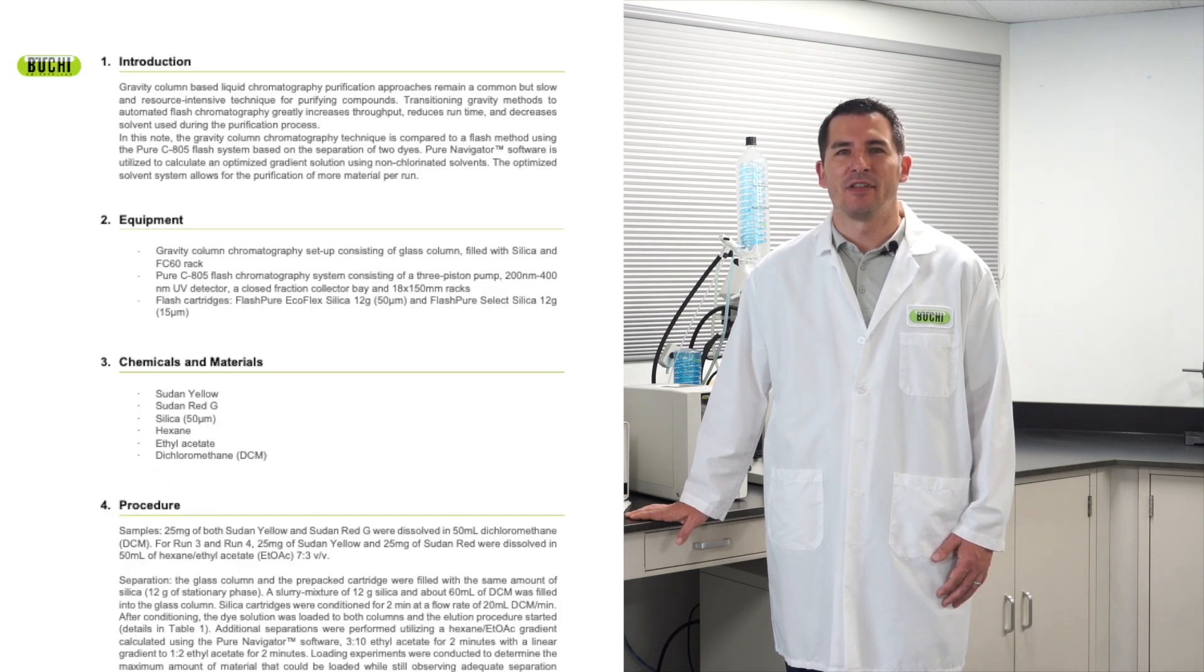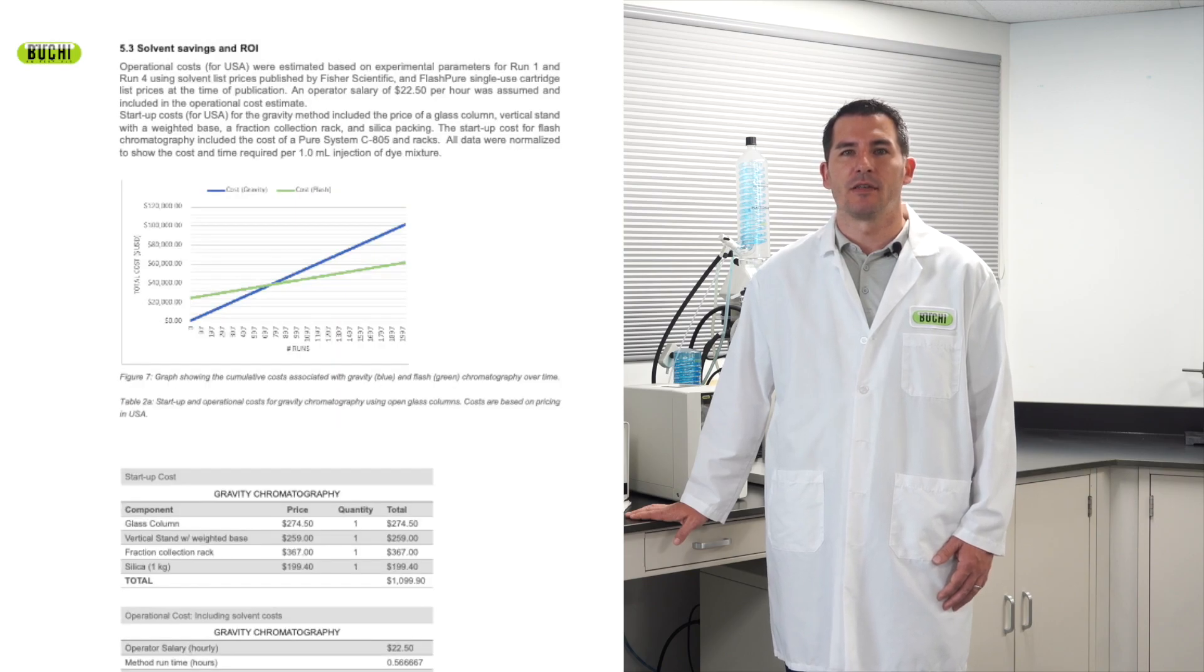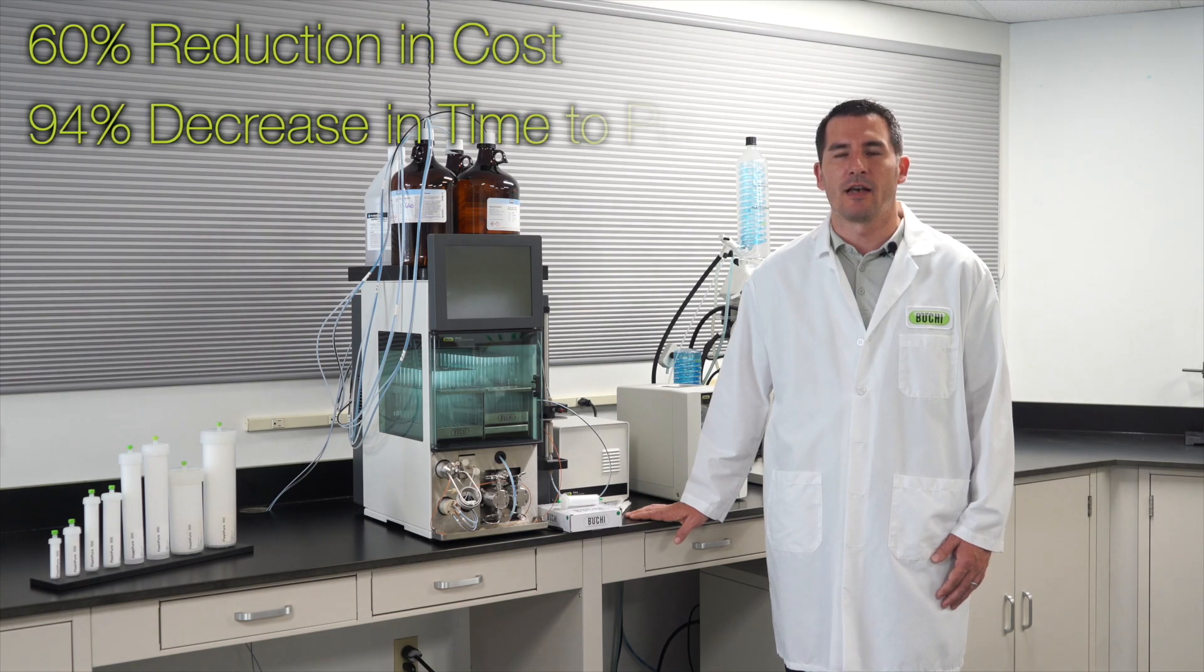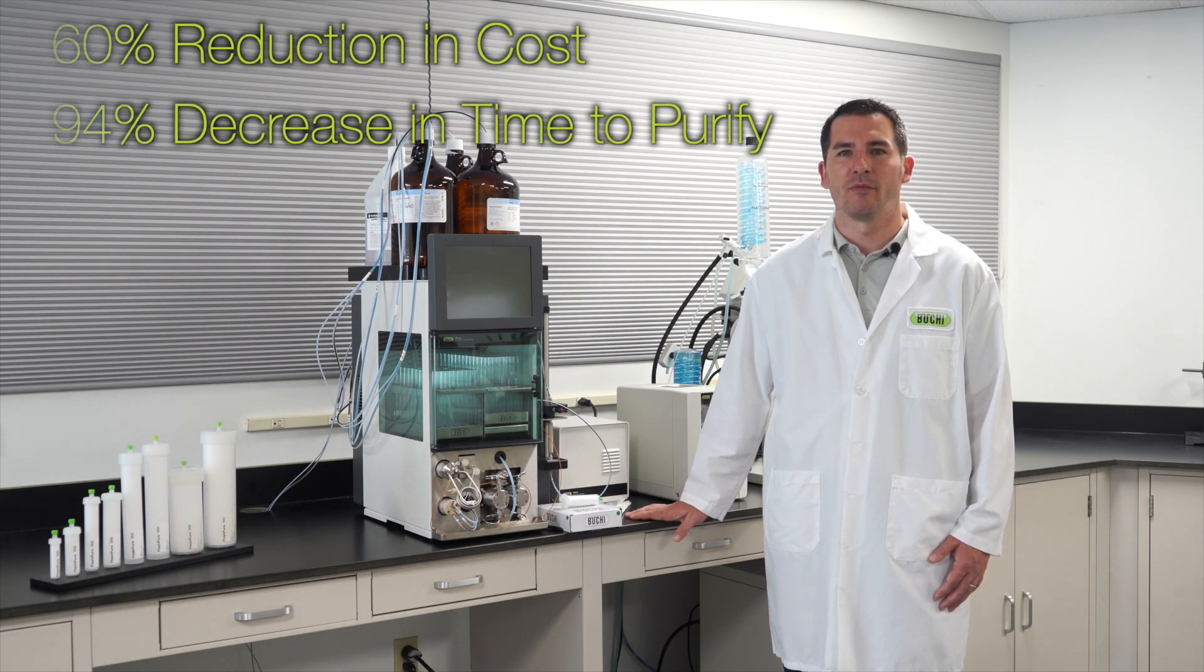In application note 793, we compared the efficiency of classical gravity column separations to the pure system. In that example, we found a nearly 60% reduction in cost and 94% decrease in the time required to purify the same amount of material. Check out the details in the link below.